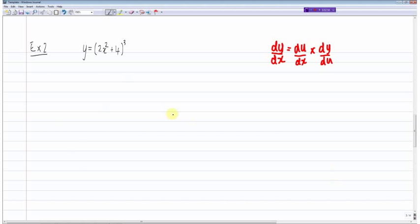In this case, we've got y is equal to 2x squared plus 4 and the whole thing is cubed. So the term, this term here is being cubed. So we would say u is equal to 2x squared plus 4 and then say y is equal to u cubed.